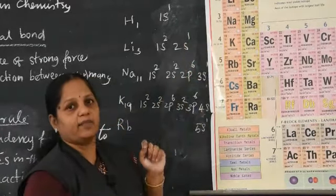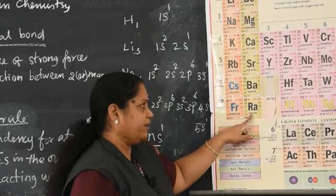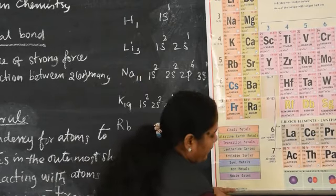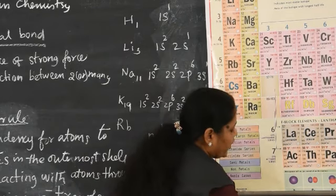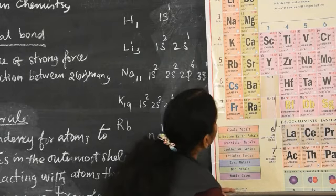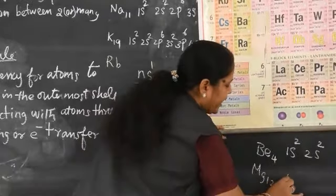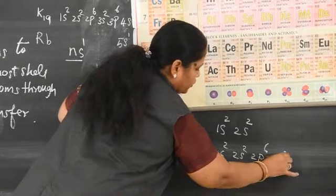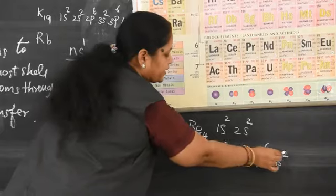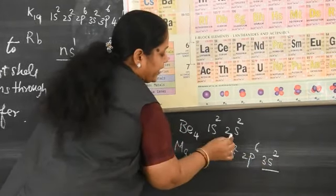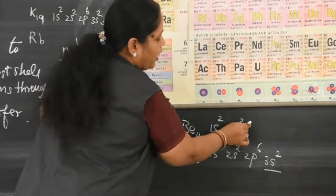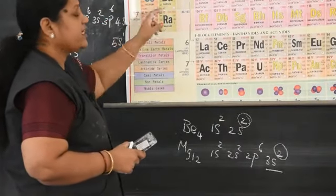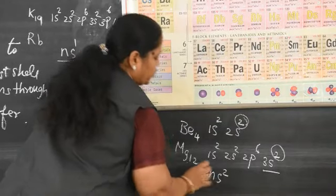For group 2 — beryllium (Z=4): 1s², 2s². Magnesium (Z=12): 1s², 2s², 2p⁶, 3s². In each case the last electron enters an S orbital with 2 electrons. The outermost shell has 2 electrons, so these are represented as ns². These are called S block elements with general formula ns².